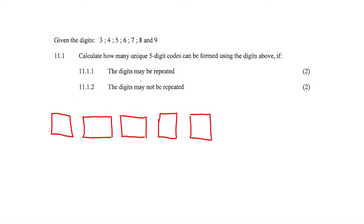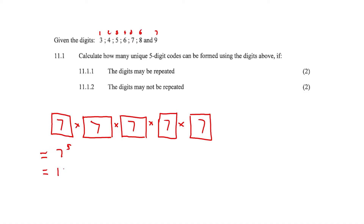So in our five blocks, if the digits may be repeated, we have seven digits — so there are seven possible digits to use in the first place, seven in the second, seven in the third, seven in the fourth, seven in the fifth. We always multiply our blockies. So seven times seven times seven times seven times seven — that's seven to the power of five, which equals 16,807.